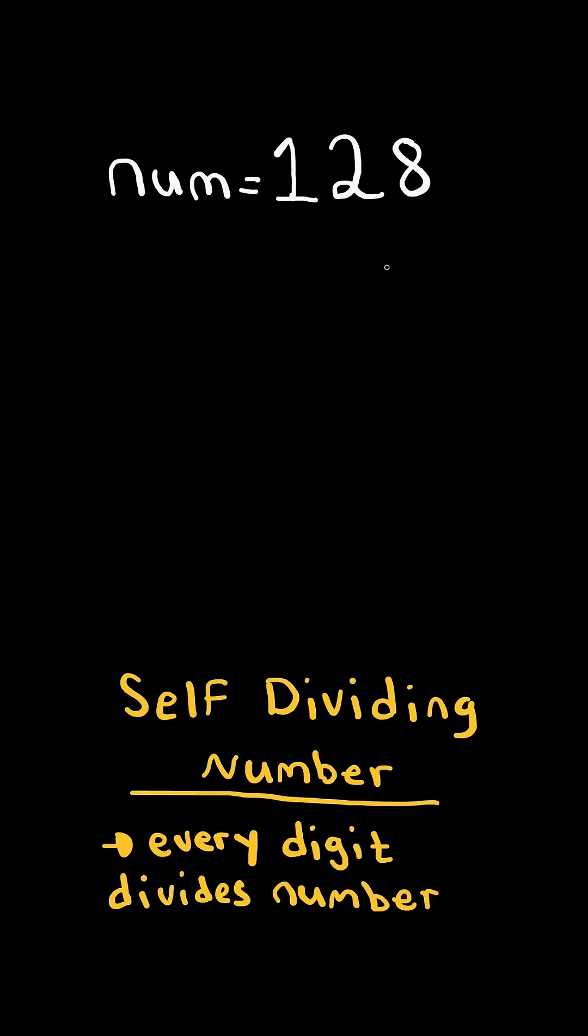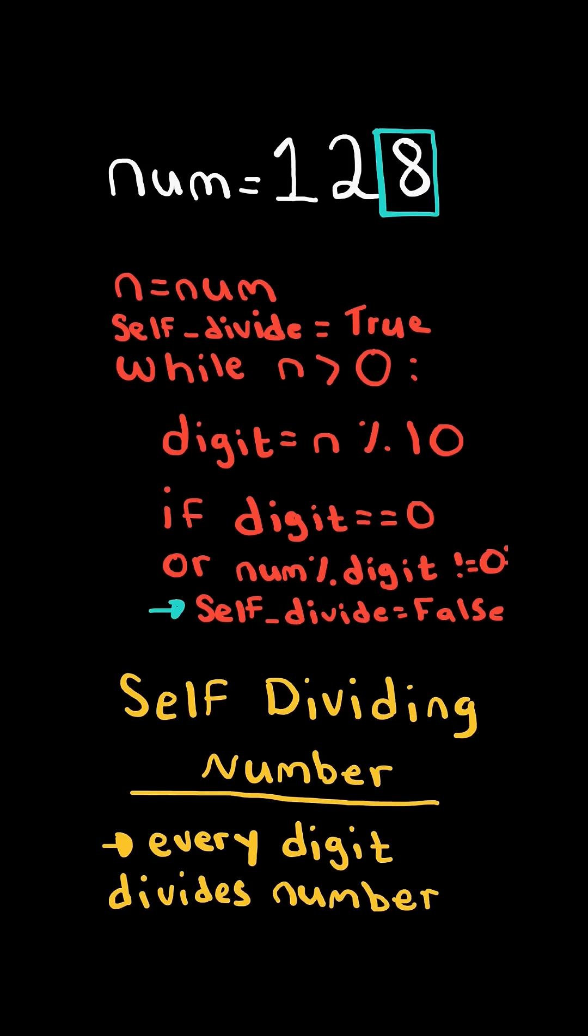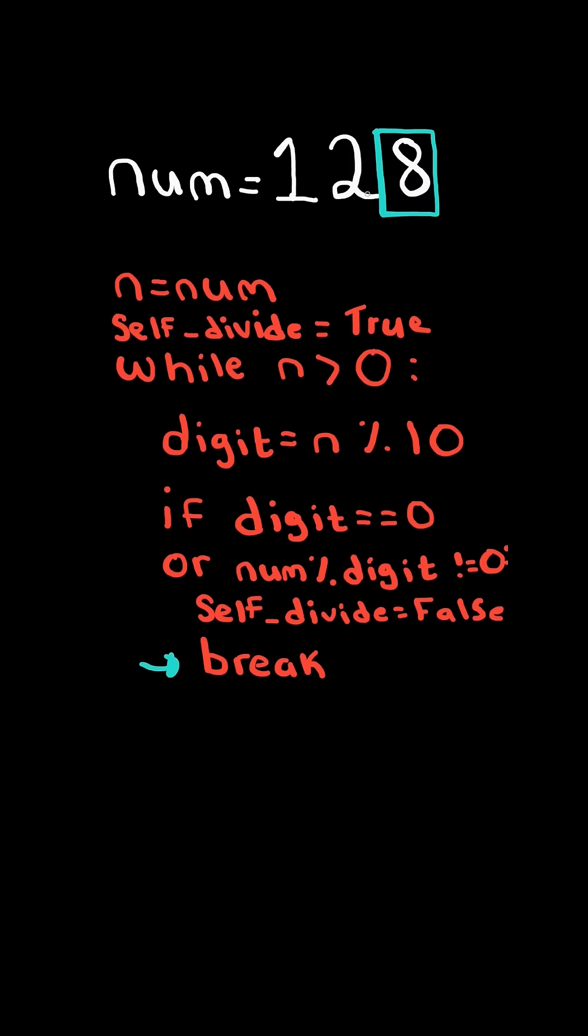To figure out if a number is self-dividing, we create a copy of the number. We mod n by 10 to get the last digit. If the digit equals 0 or the digit does not divide num, we set a flag to signal it's not self-dividing and exit the loop.